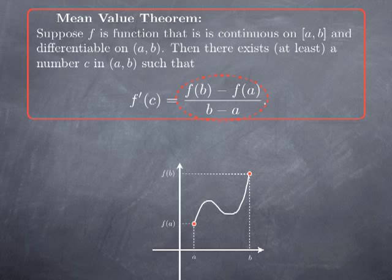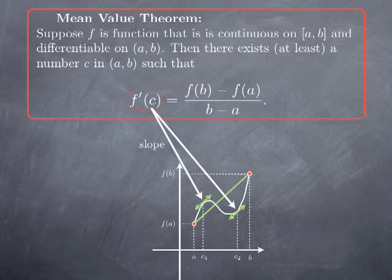Geometrically, this average rate of change of the function is the slope of the secant line that joins the points of coordinates a, f(a) and b, f(b). What the theorem says is that the derivative of the function takes this value — in other words, there are tangent lines whose slope is the same as the slope of the secant line. In other words, there are tangent lines to the graph that are parallel to the secant line. This is the geometric interpretation of the theorem.